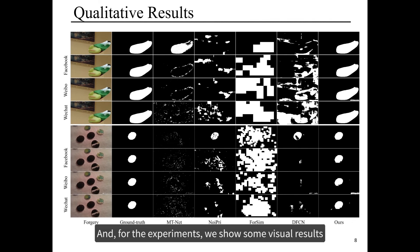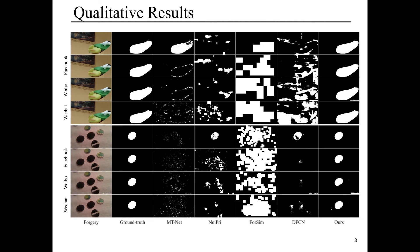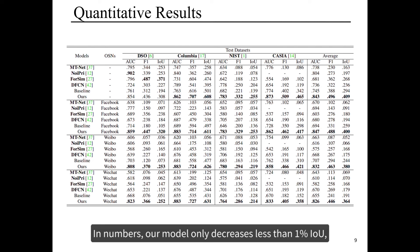And for the experiments, we show some visual results to demo our model's robustness. In numbers, our model only decreases less than 1% IOU, while the other methods may suffer from around 8% degradations.